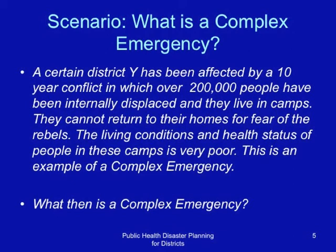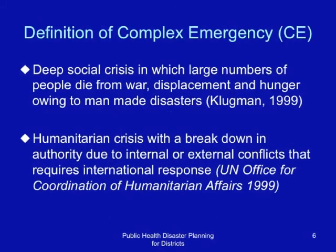The living conditions and health status of people in these camps is very poor. This is an example of a complex emergency. What, then, is a complex emergency? A complex emergency is a deep social crisis in which large numbers of people die from war, displacement and hunger owing to man-made disasters. This is a definition by Klugman.